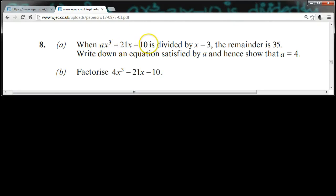When ax cubed minus 21x minus 10 is divided by x minus 3, the remainder is 35. Write down an equation satisfied by a, and hence show that a equals 4. Part b, factorize 4x cubed minus 21x minus 10.